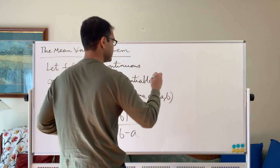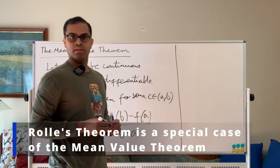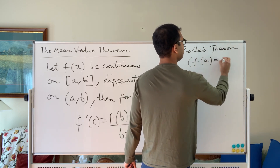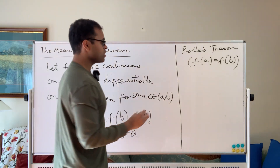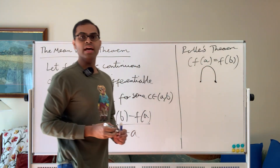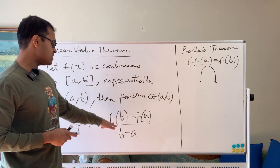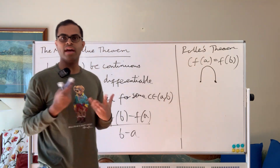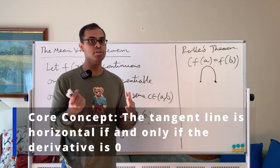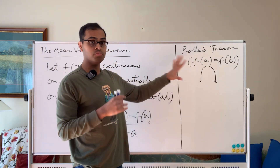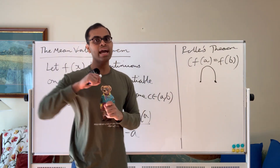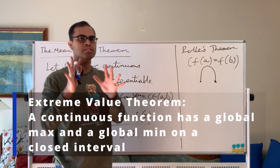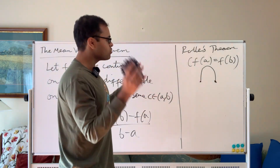Rolle's theorem is a special case — it's just the mean value theorem when f(a) equals f(b). So that's when the graph of the function starts at a point, maybe goes up and comes back down to the same value. Then Rolle's theorem says f'(c) equals zero for some c, because the right-hand side is zero — that means the tangent line is horizontal. The rough idea of the proof of Rolle's theorem is that there has to be a max or a min of the function, since it's continuous, and at the max or min the derivative is zero.